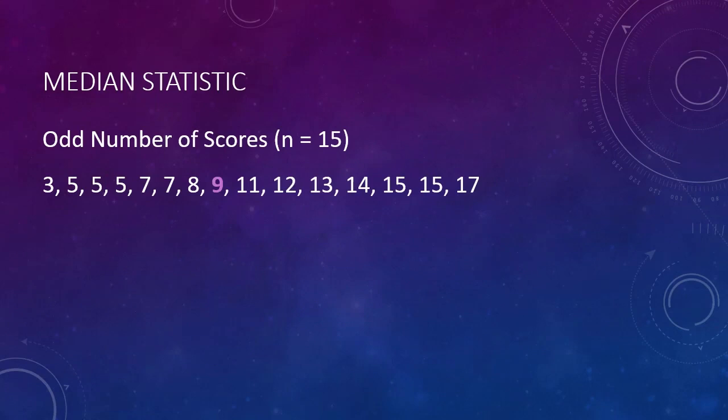We can calculate the median as a descriptive statistic. Here is a list of 15 scores. The median is the middle score in an ordered list of scores. I have already put these scores in order. The score of 9 has 7 scores below it and 7 scores above it. Therefore, the median is 9.